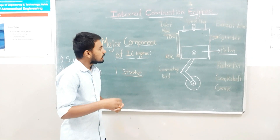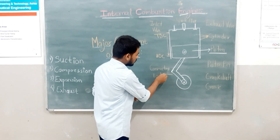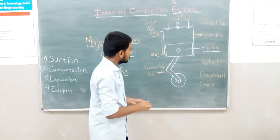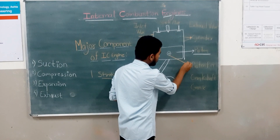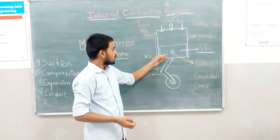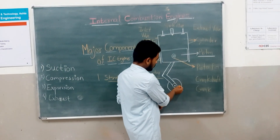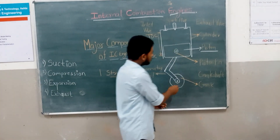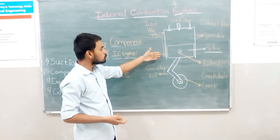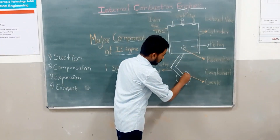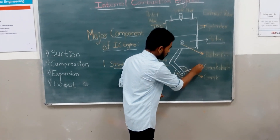The next part is the connecting rod, which connects the piston and the crankshaft. The piston pin, also known as the gudgeon pin, connects the piston and the connecting rod. The crank converts the reciprocating motion — that is, the up and down motion of the piston — into rotational motion. This part is known as the crankshaft.